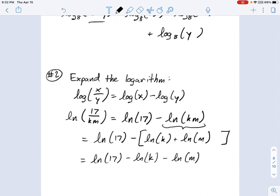As you get more practice with these, you won't need to go through all these intermediate steps. You'll just be able to see that I've got a numerator right here, 17 was on the top, and these are both denominators. Natural log 17 minus natural log k minus natural log m. Because k and m are denominators, they get these minus signs.